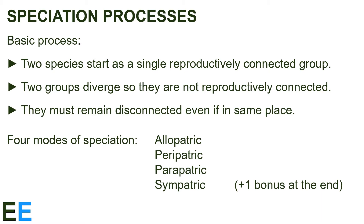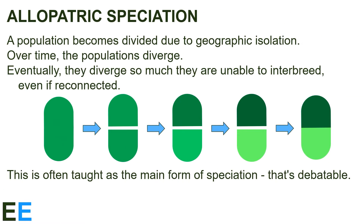At the very end, I'll also mention another form of speciation that a lot of textbooks don't talk about. The first mode of speciation is allopatric speciation. In this process, a population becomes divided due to geographic isolation. Over time, due to their isolation from one another, the populations diverge. Eventually, they diverge so much that they are unable to interbreed even if reconnected.